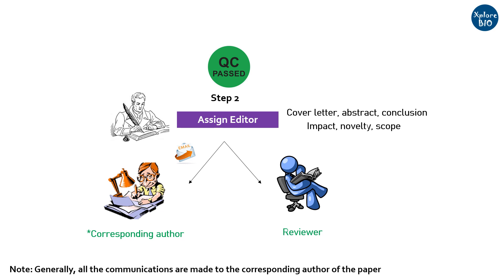Additionally, the corresponding author can log in and check the status of the paper at the journal's portal. He or she can check if the paper has been assigned an editor, is under review, needs revision, or has been rejected. A few journals also email a link to all co-authors of the paper to check its status.